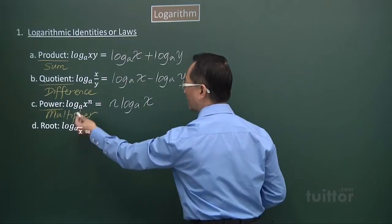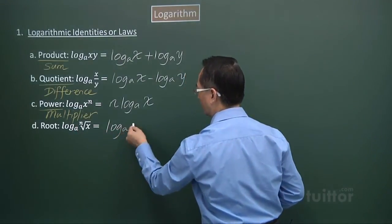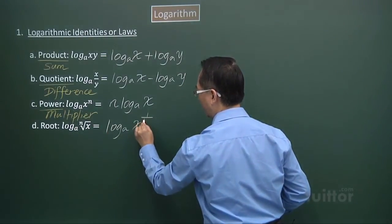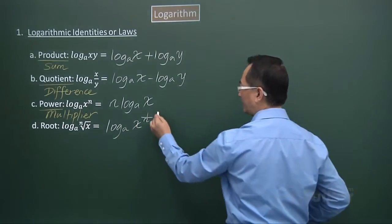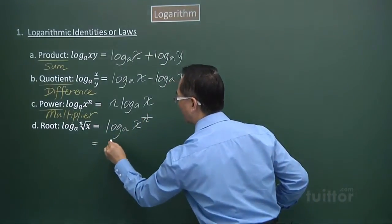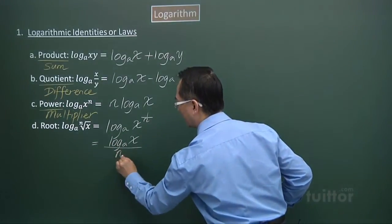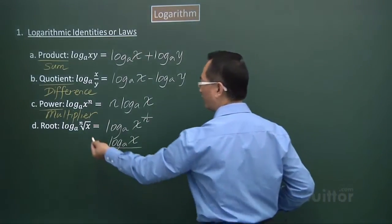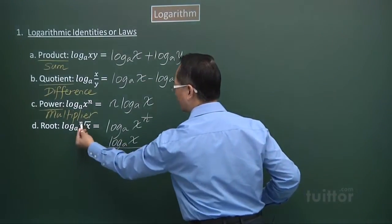The root law is quite similar. If we put it in index form, we have 1 over n as the index of x, then this power becomes the multiplier, giving us log base a x over n. So whatever root we have — say the fifth root — n will be the divisor.